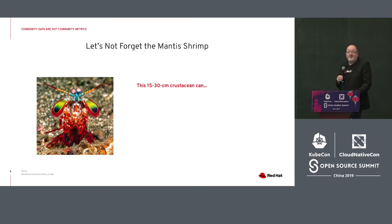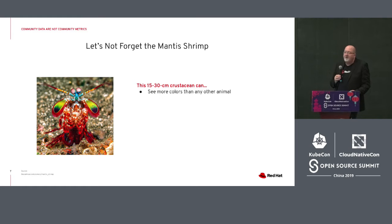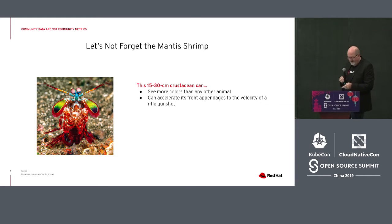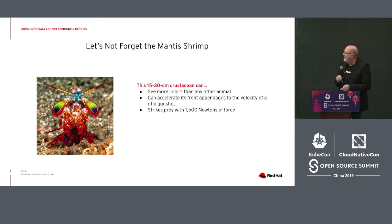Let's not forget the mantis shrimp. This is a 15 to 30 centimeter crustacean. It can see more colors than any other animal, and as you can see, it has a lot of colors to see. It can also shoot its front legs out to the velocity of a gunshot from a rifle. And that's basically how it kills anything that comes near it when it's hungry. That will strike any prey with 1,500 newtons of force.